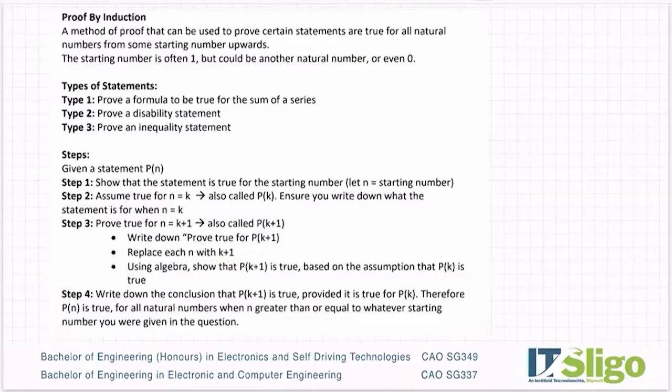You basically say that you've just shown p of k plus one is true, assuming p of k was true in the first place. And you often say you've proven it true for the starting number and therefore it's true for all numbers. So that's what we're going to go through in the next batch of questions.